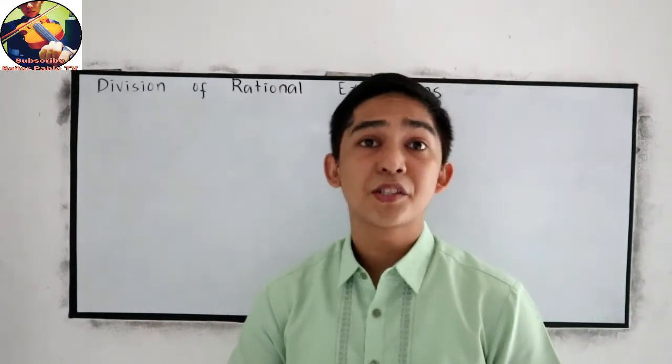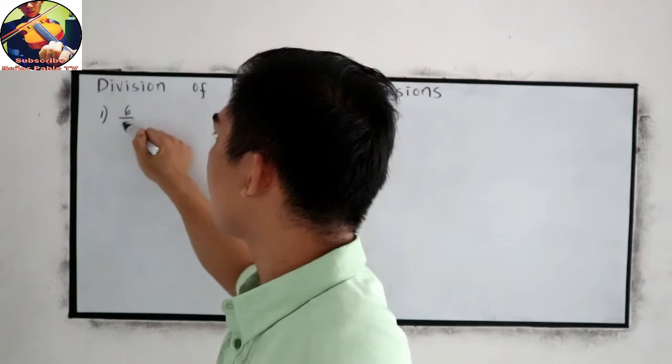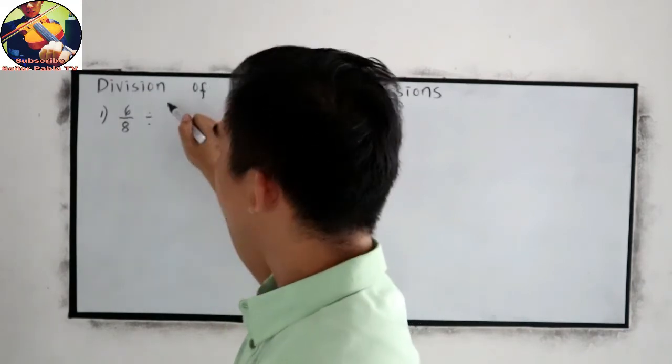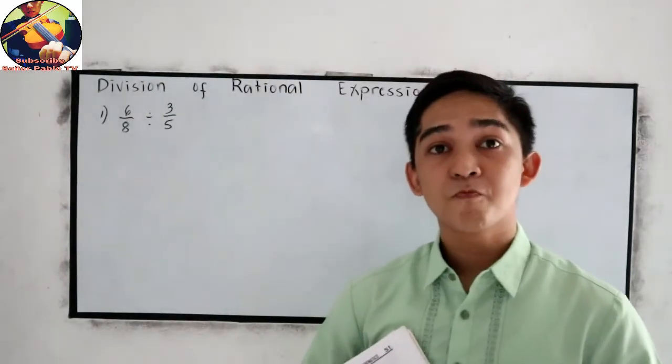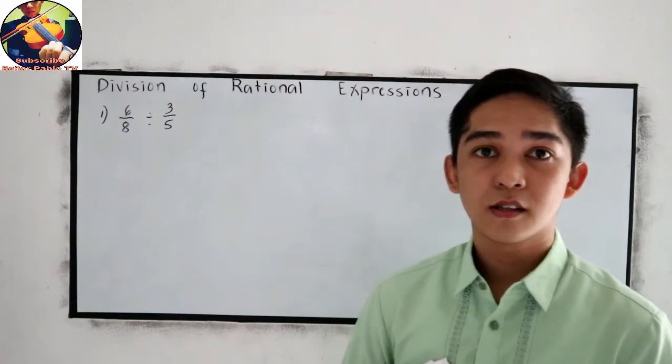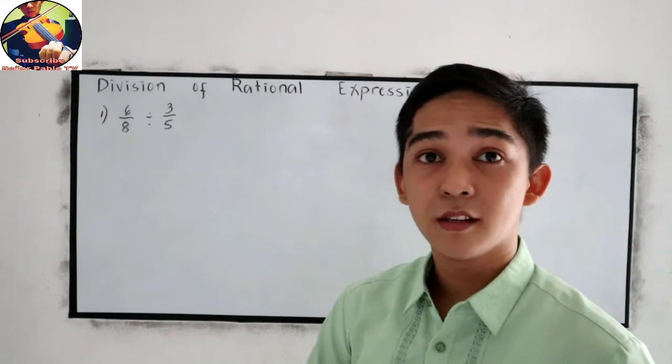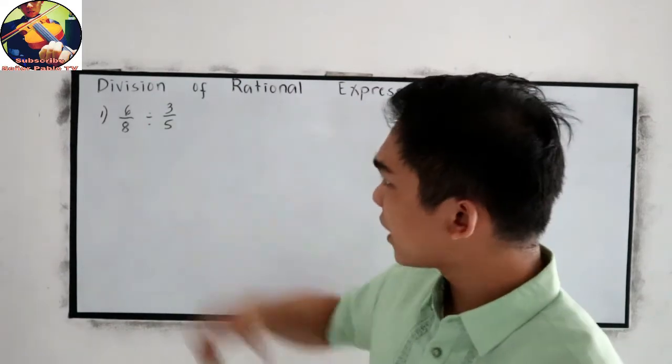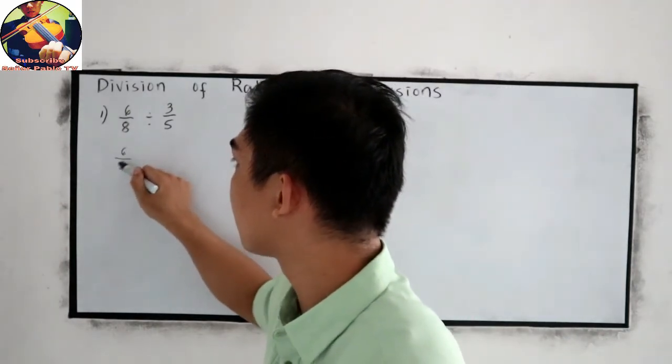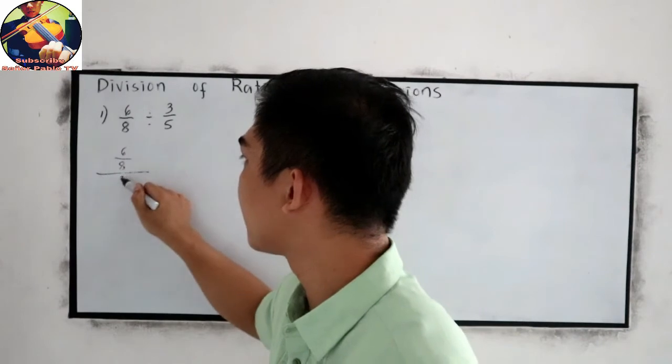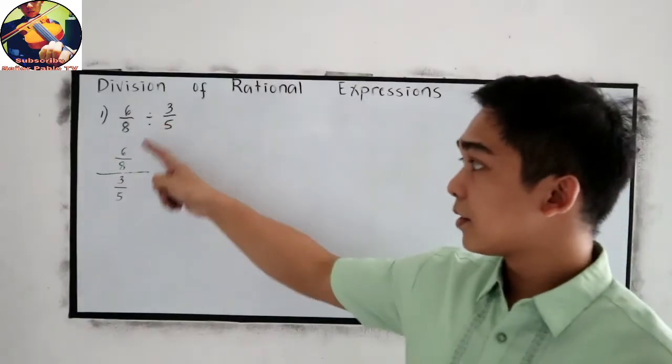Let's have our example number 1. If you have 6 over 8 divided by 3 over 5, this can be written as 6 over 8 divided by 3 over 5. They are similar.